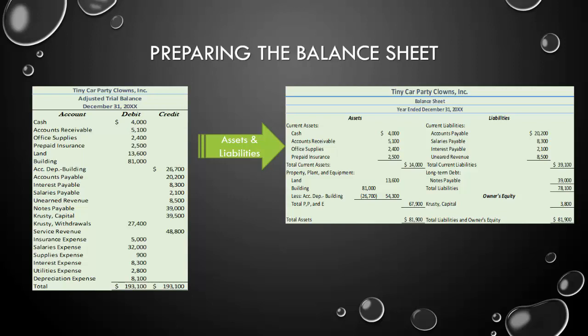For Tiny Car Party Clowns, land and building are the two things we're not going to expend within the next year, so they get listed under property, plant, and equipment (PP&E). You put the balance of both your current assets and your total PP&E into the balance sheet and add them together. Tiny Car Party Clowns has $14,000 in current assets and $67,900 in PP&E, for total assets of $81,900.